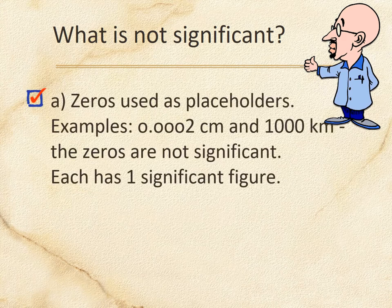What's not significant? You can't count a zero as significant until you reach a non-zero digit first. So for 0.0002 centimeters, the first real number is 2; those zeros in front of the 2 don't count, even though they're after the decimal. And 1,000 kilometers is just one sig fig because those zeros have no decimal point — they're just placeholders.